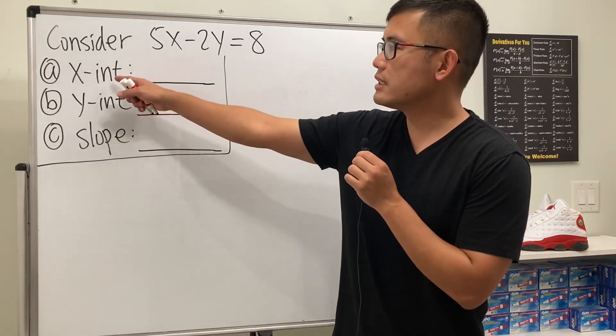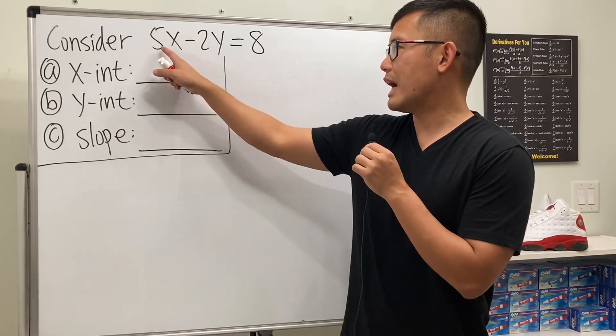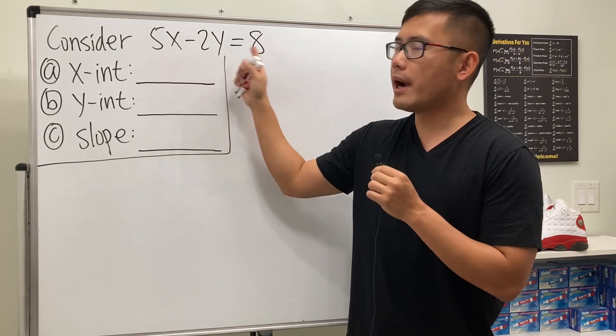Here I will show you how to find the x-intercept, y-intercept, and slope of a line. The equation we have is 5x - 2y = 8.